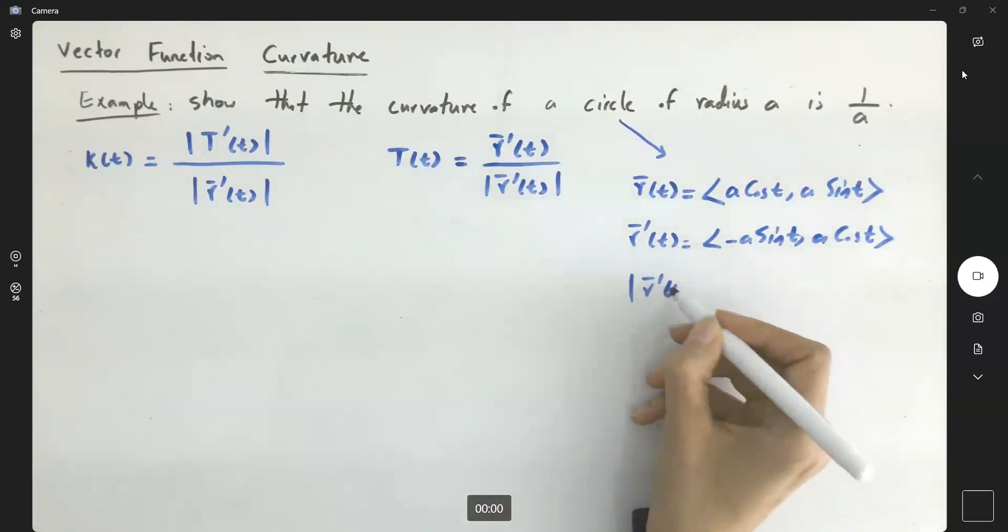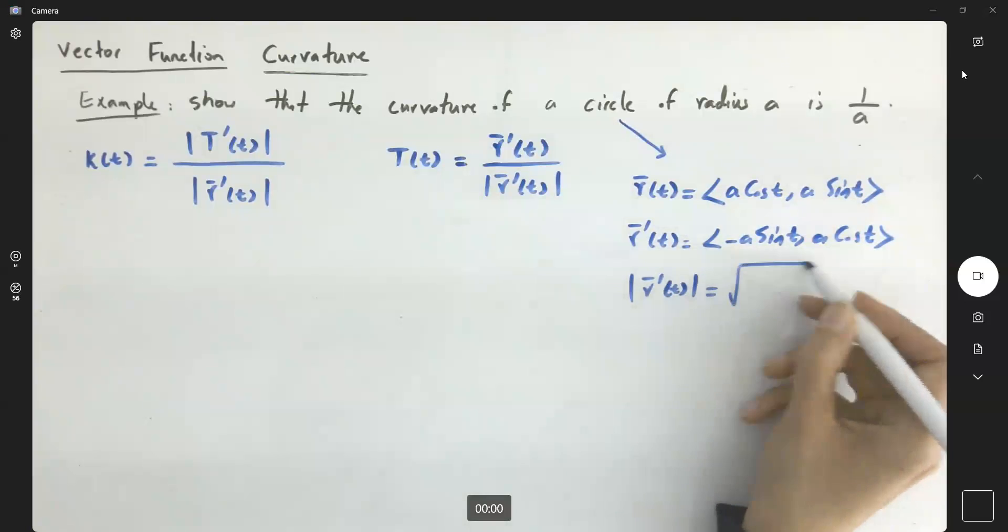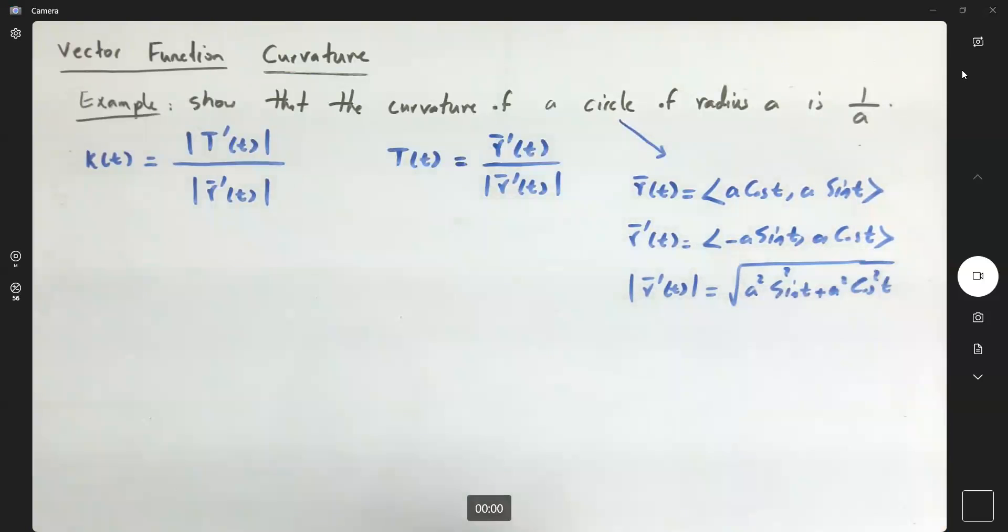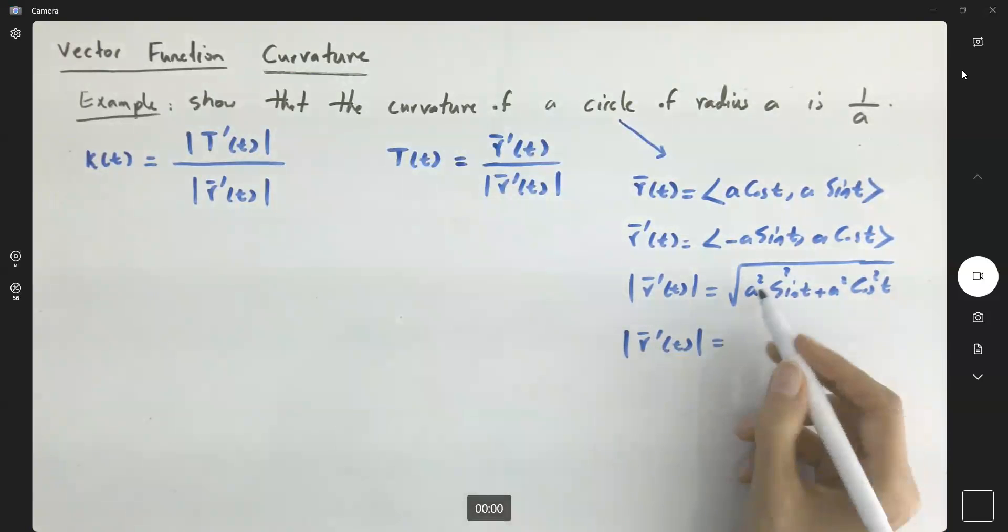Its magnitude is equal to the square root of A squared sine squared of T plus A squared cosine squared of T. So the magnitude of R prime is equal to, if you factor out A squared, you're going to have 1, so it is A.